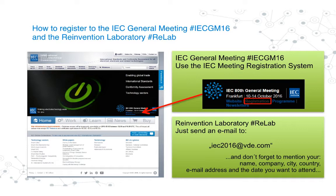The Reinvention Laboratory discussions take place on the fourth floor of our conference center. Therefore, you have to register via email. If you are not already registered via the IEC General Meeting website but you want to take part in the Reinvention Laboratory as an audience, or participate actively, then you have to register via the IEC2016@vde.com email address. You have to mention your name, your company, your city, country, and the date when you want to take part.